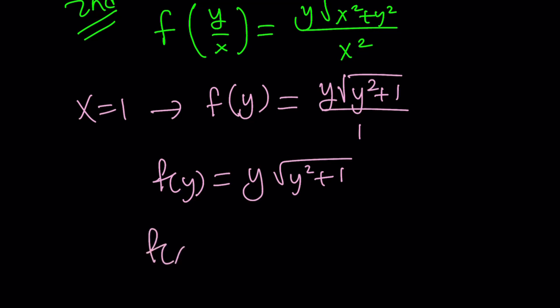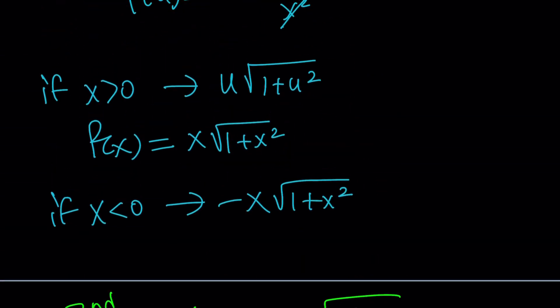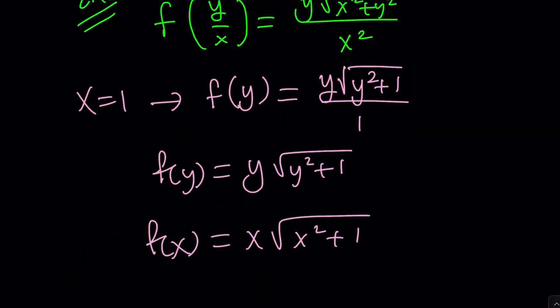And then if you wanted to write it as f of x, that will be x times the square root of x squared plus 1. Now here's the million dollar question. With the first solution, I got two answers, depending on the x values. But here, I only got one answer. Why is that happening? Because I used x equals 1. If I used x equals negative 1, would I get a different answer? That would be a good question, right?